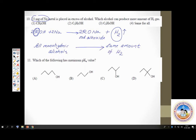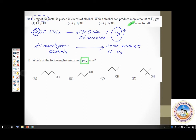Question number 11: which of the following has maximum pKa value? The pKa scale is a measure of acid strength. Lower the pKa value, stronger the acid. The order of acidity is: primary alcohol more acidic than secondary, more acidic than tertiary.